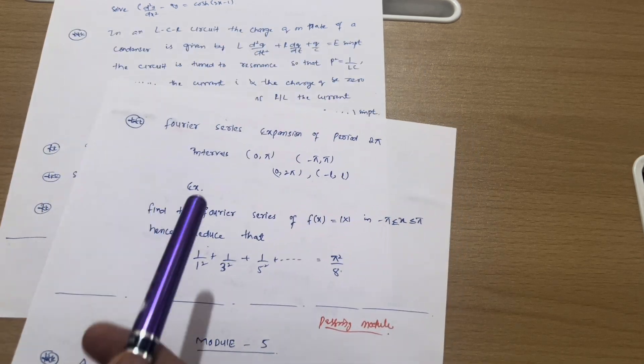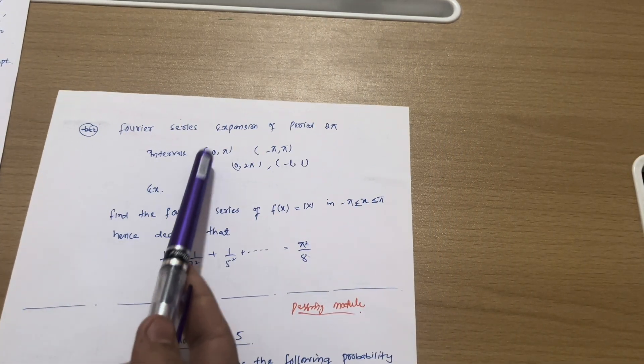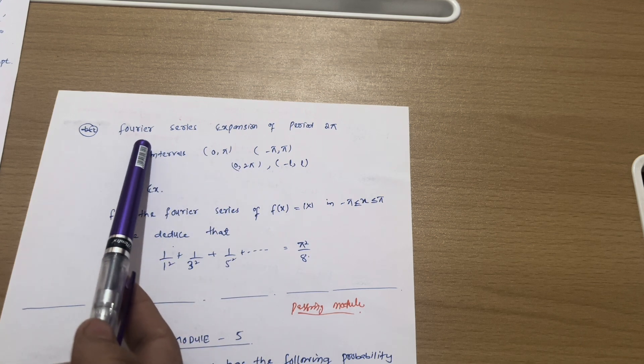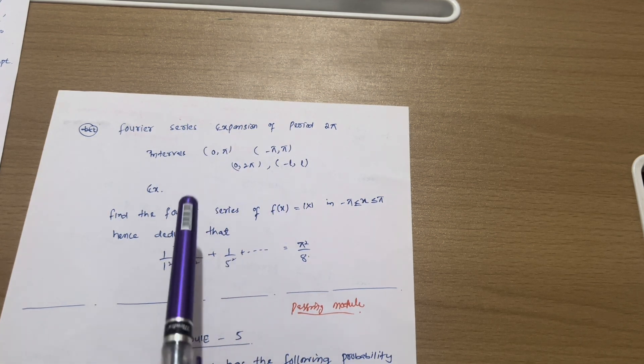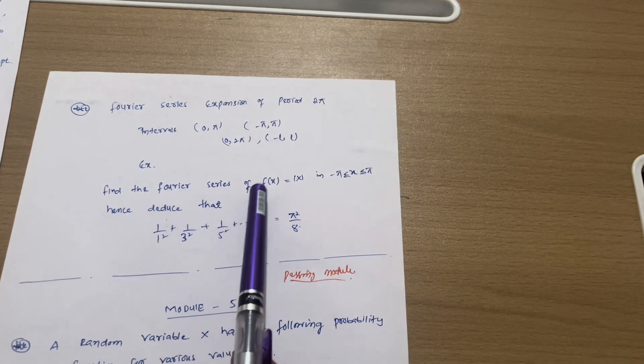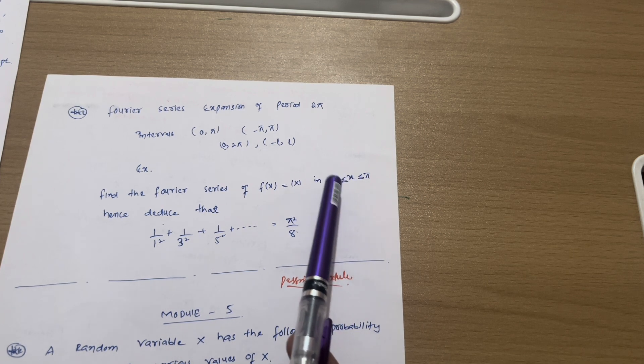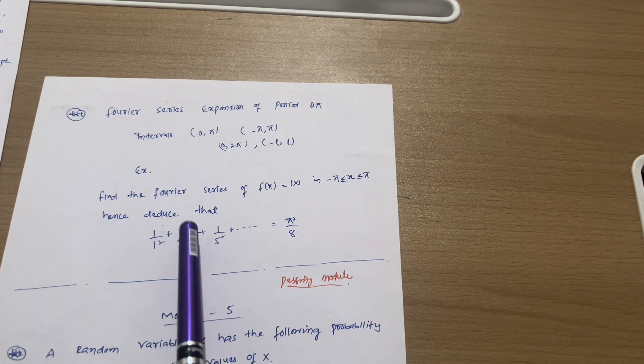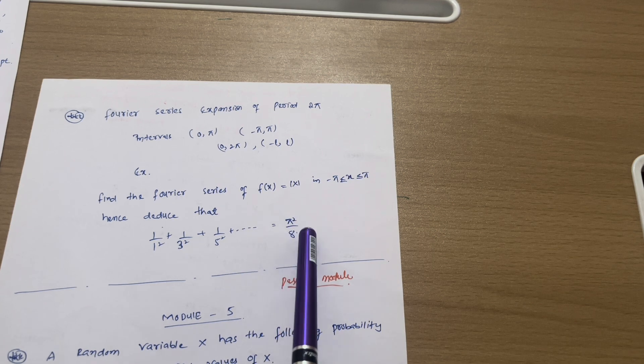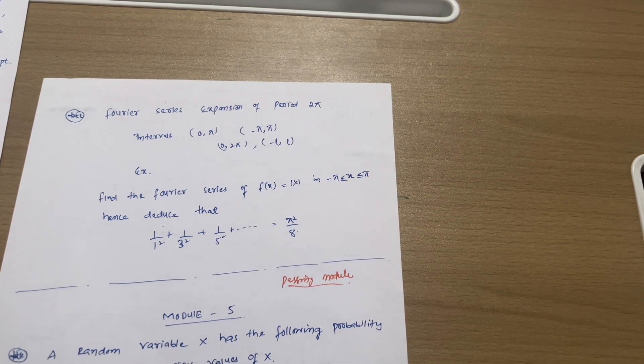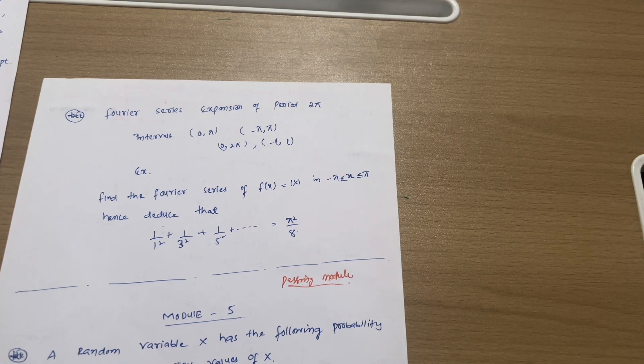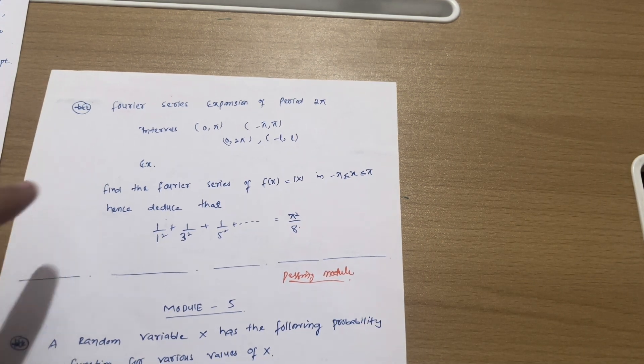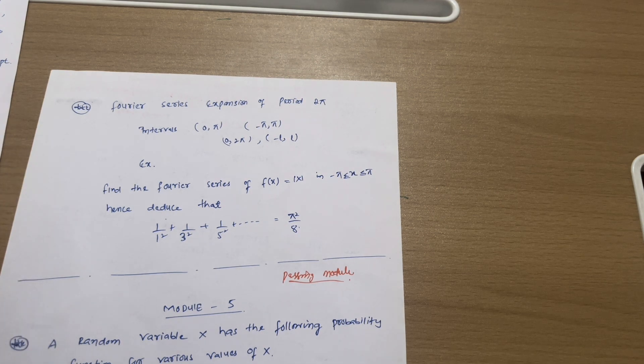Next we have Fourier series expansion of period 2π, that is intervals may be 0 to π, minus π to π, 0 to 2π, minus l to l. These may be the intervals. On these intervals you just expand the Fourier series. For example, find the Fourier series of f(x) equals mod of x where x is greater or equal to minus π, less or equal to π. Hence deduce that 1/1² + 1/3² + 1/5² and so on equals π²/8. These type of questions will appear in the examination once you go through previous year question papers. Whatever papers I have uploaded on my Instagram account, those papers are enough to cover Fourier series expansion. Go through three to four problems on this particular concept so that you will grab at least 15 to 16 marks from Fourier series expansion.